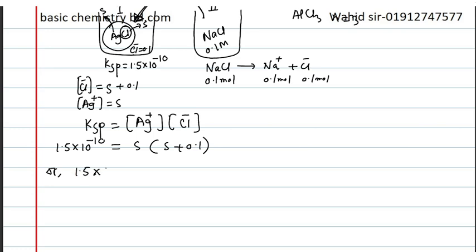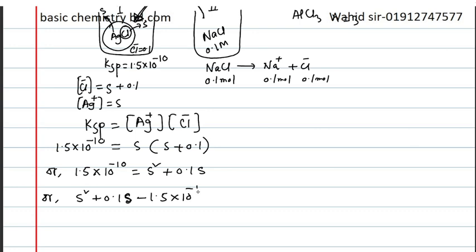So: 1.5 into 10 to the power minus 10 equals s squared plus 0.1s. Rearranging: s squared plus 0.1s minus 1.5 into 10 to the power minus 10 equals 0.